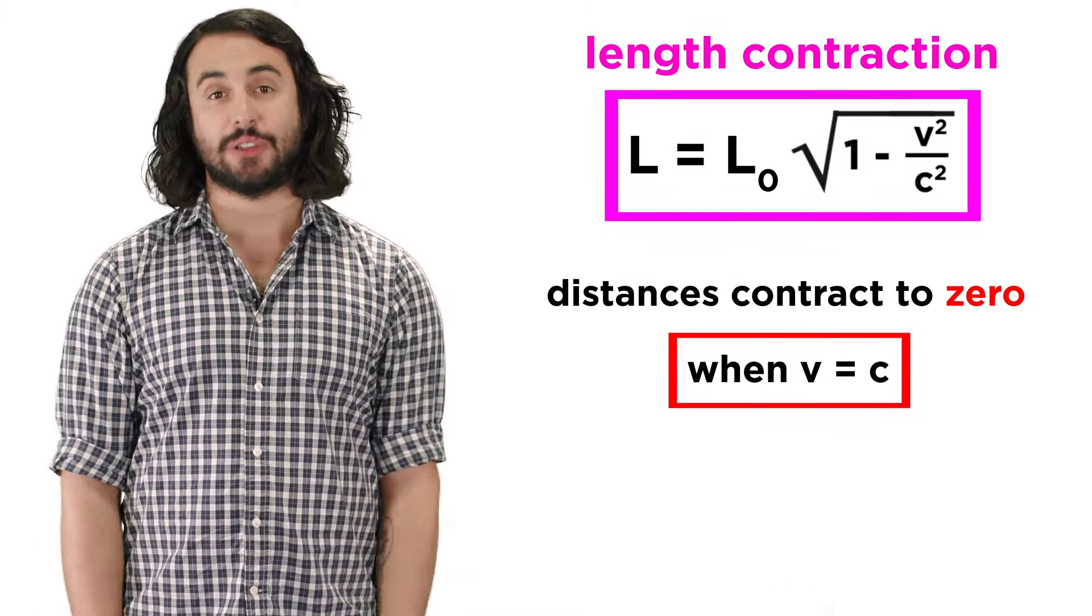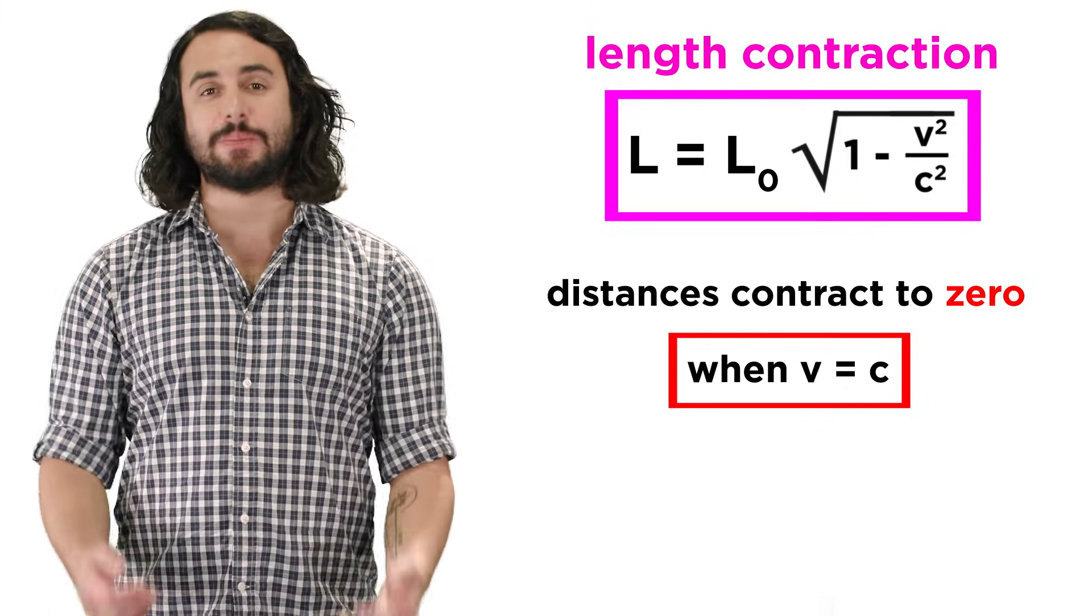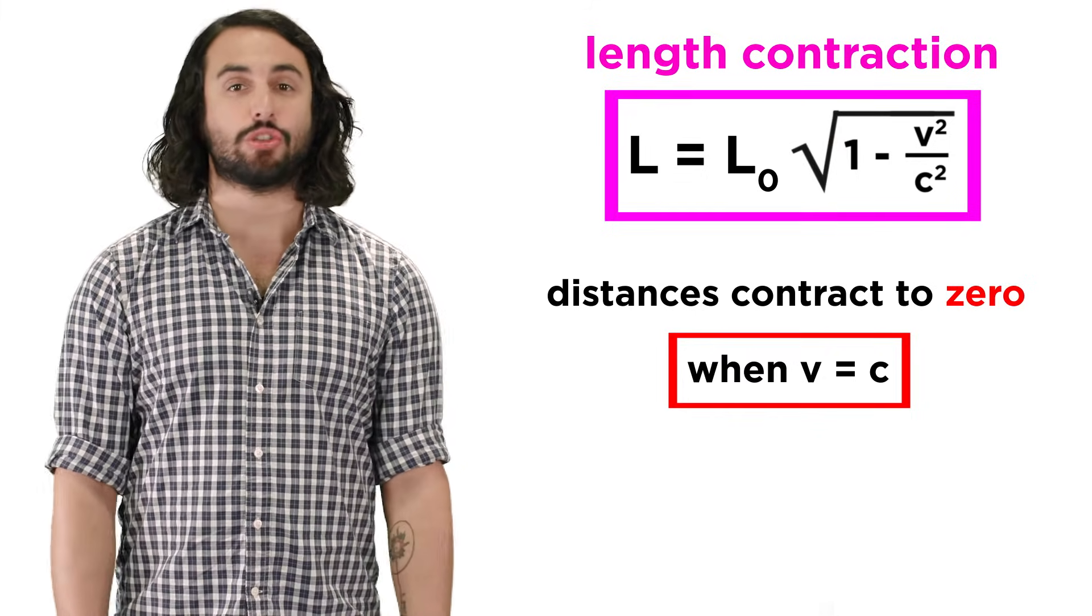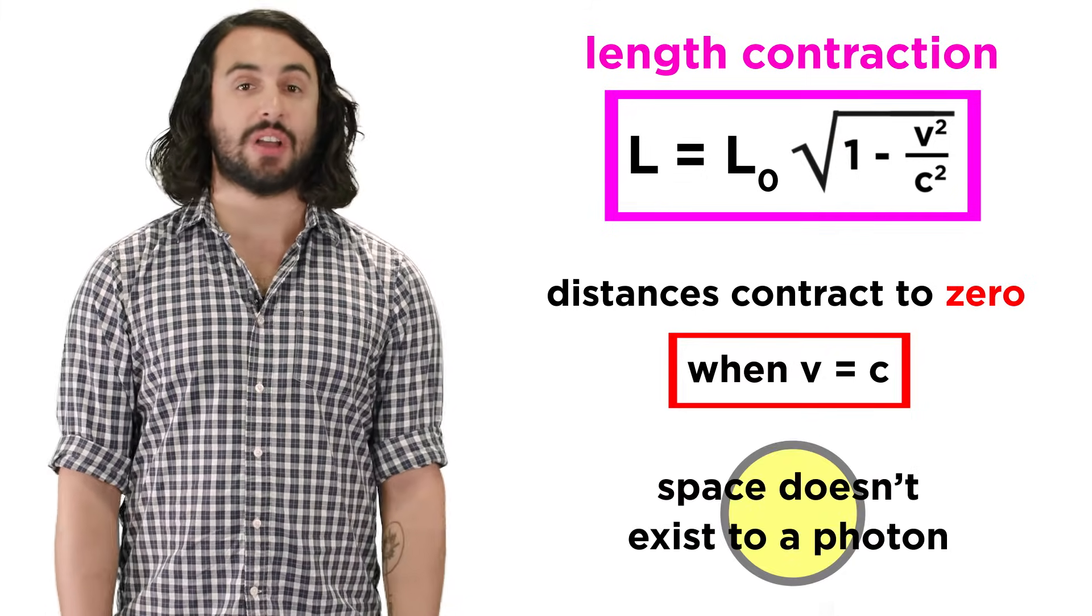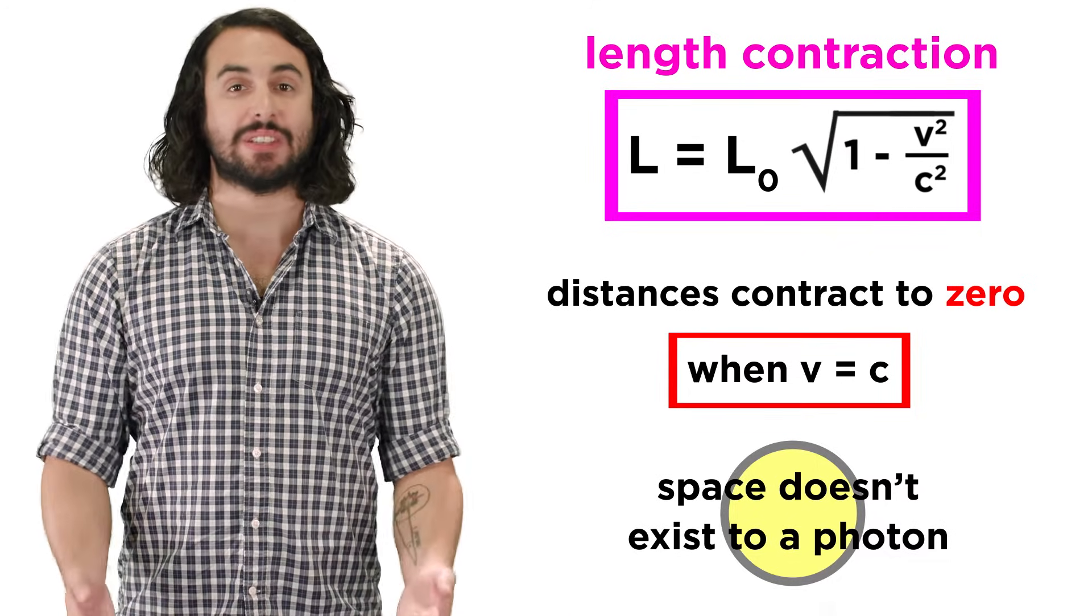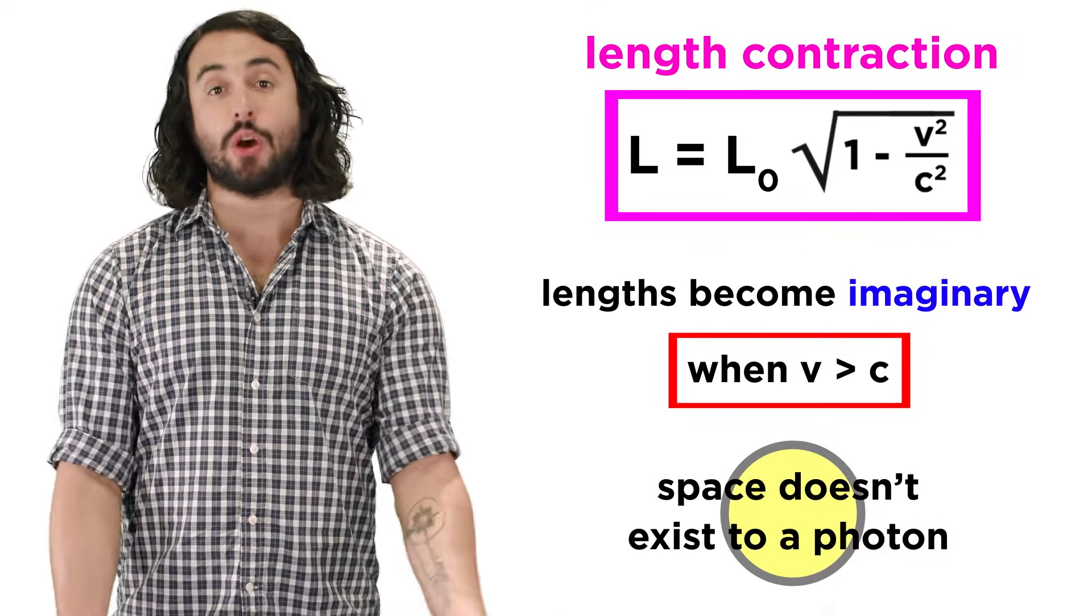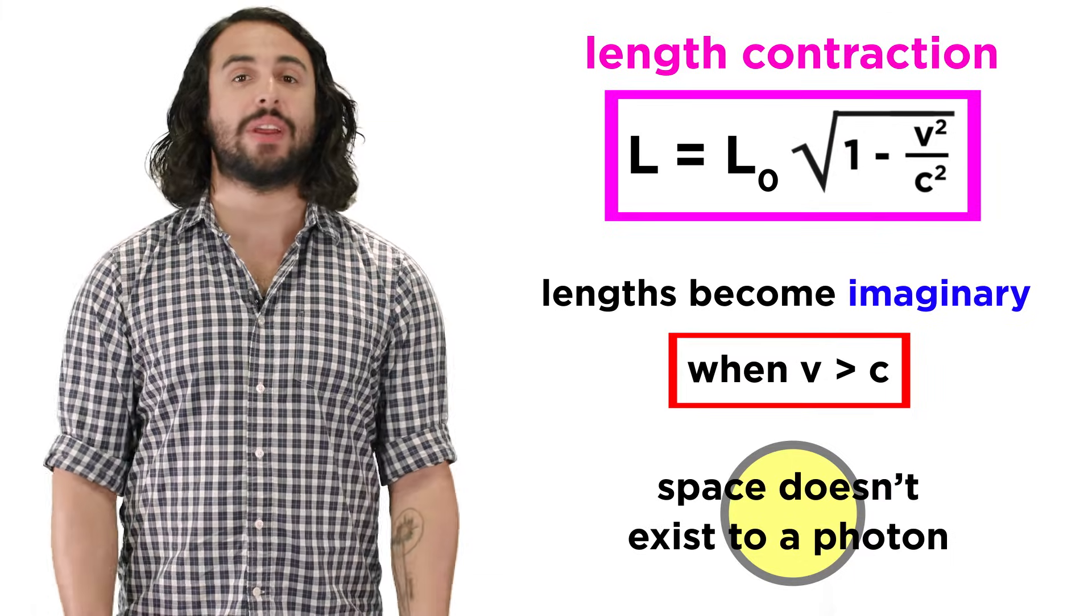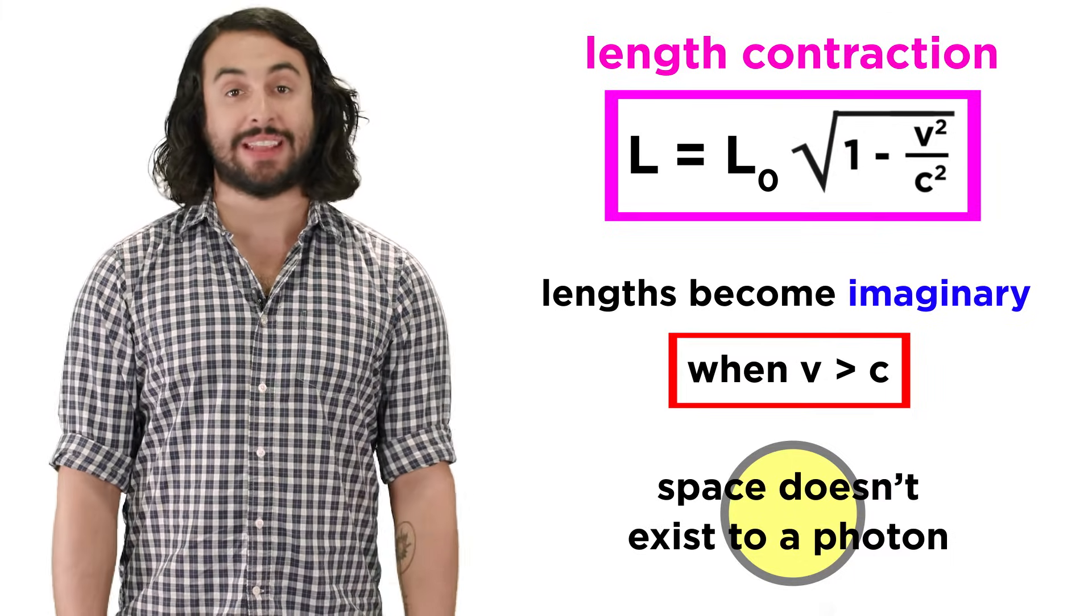The same goes for length. In the limit of the speed of light, distances contract to zero, so a photon experiences zero space as well. To go faster than this would mean measuring imaginary length, which again is absurd.